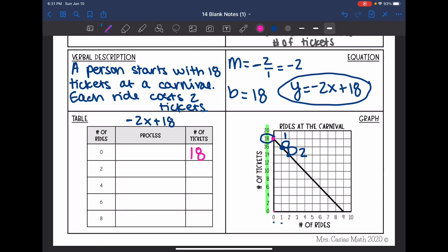When the number of rides was two, the number of tickets was 14. When the number of rides was four, the number of tickets was 10. Six rides is six tickets and eight rides is two tickets. So there is the rides at the carnival and the number of tickets represented four different ways.